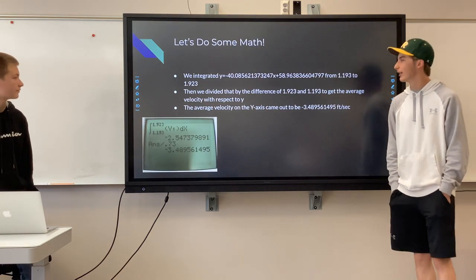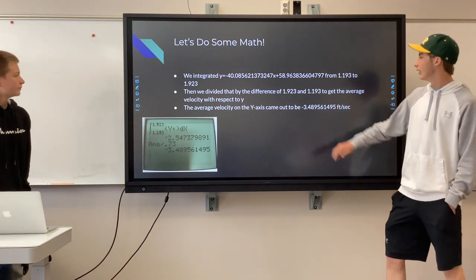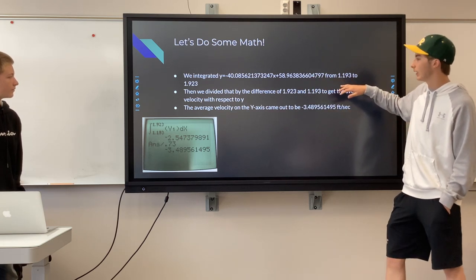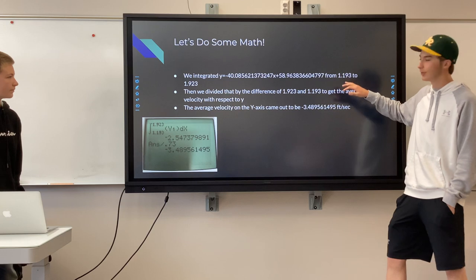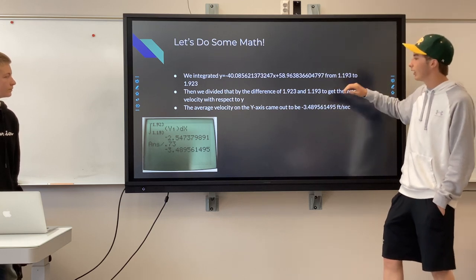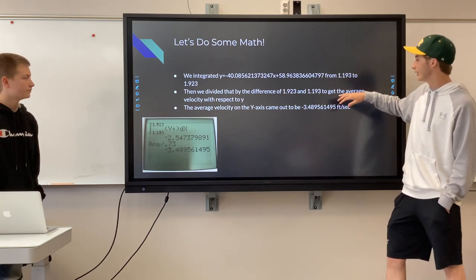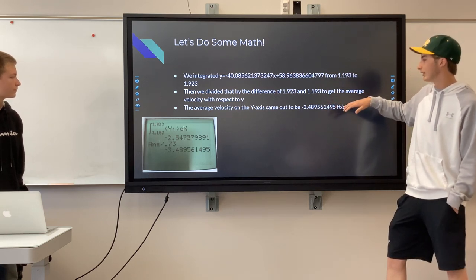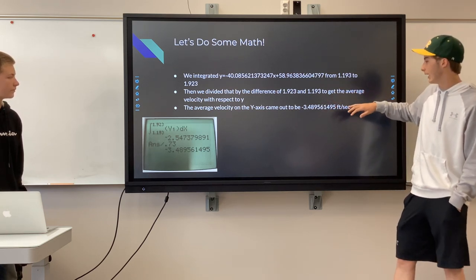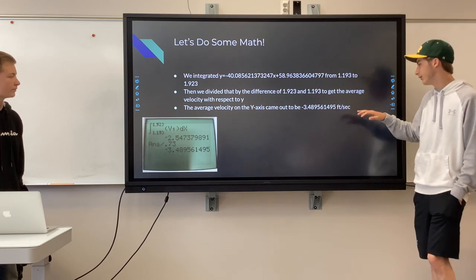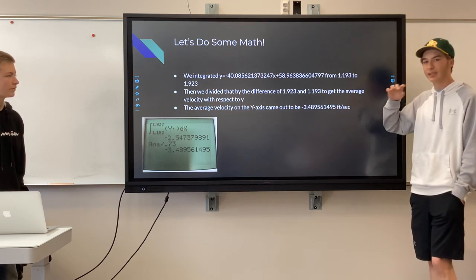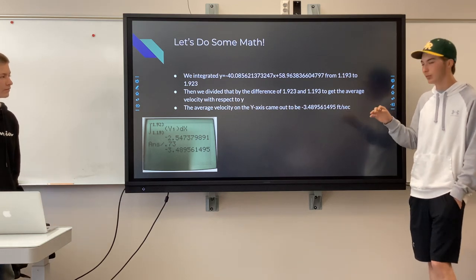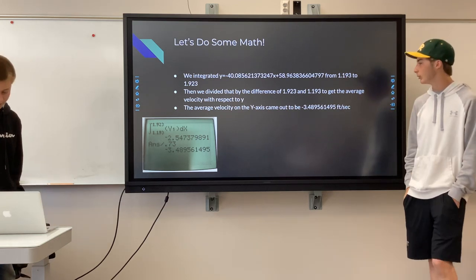We integrated this equation from 1.193 to 1.923, which was the time stamp for how long it took, then divided by the difference to get the average velocity with respect to y. The average velocity on the y-axis came out to be about negative 3.4895 feet per second, which makes sense because the velocity is larger in the negative direction since it is a curveball and moves up and down more.